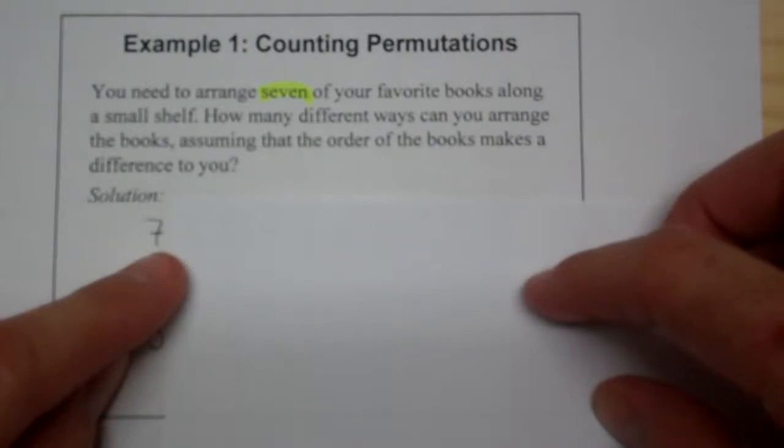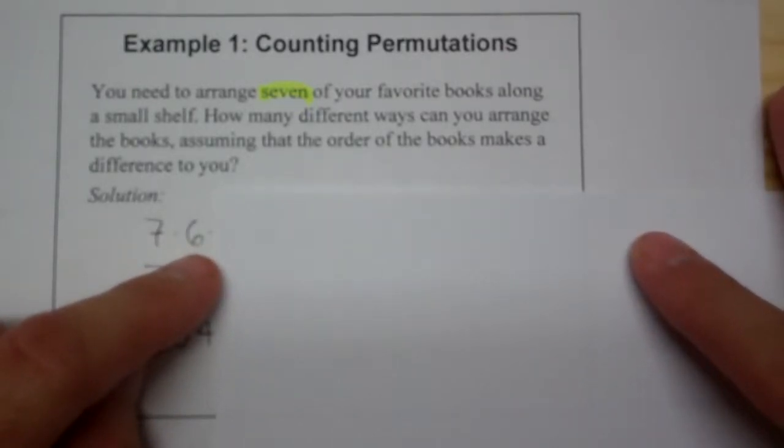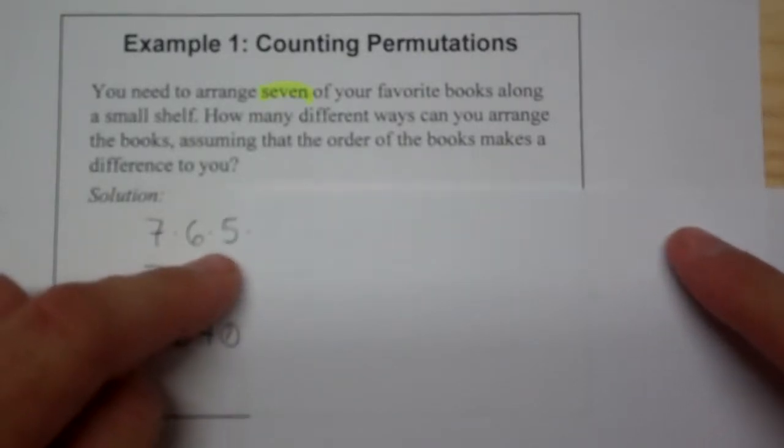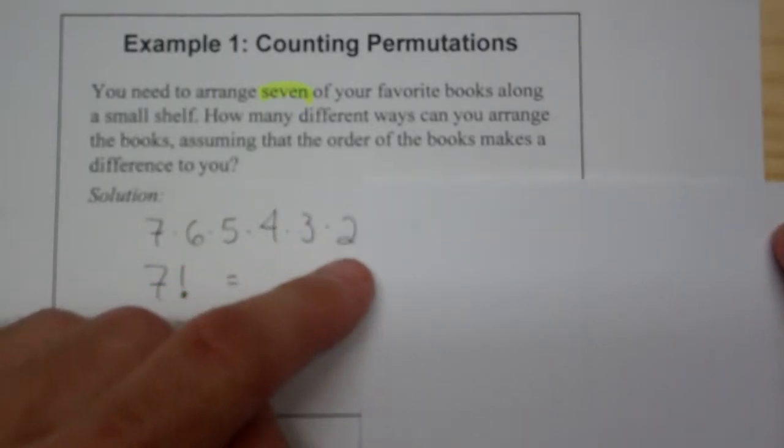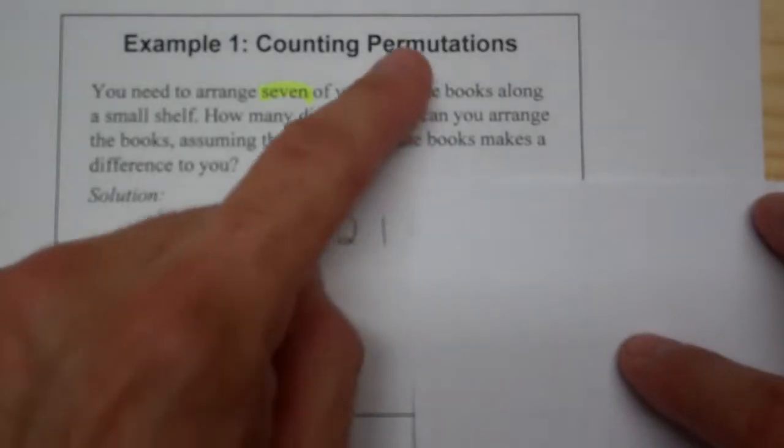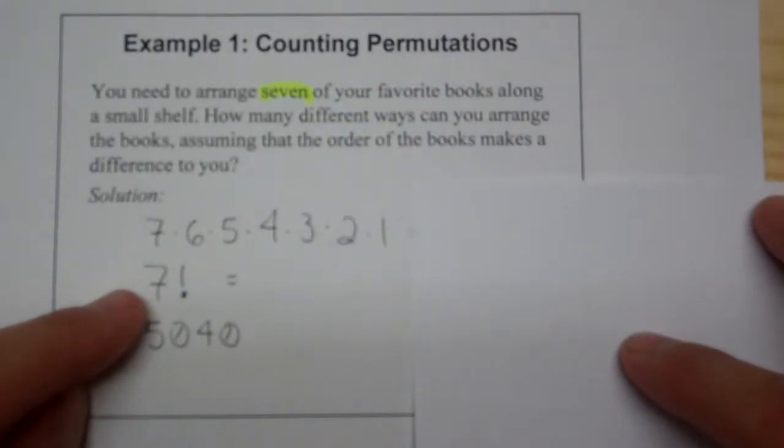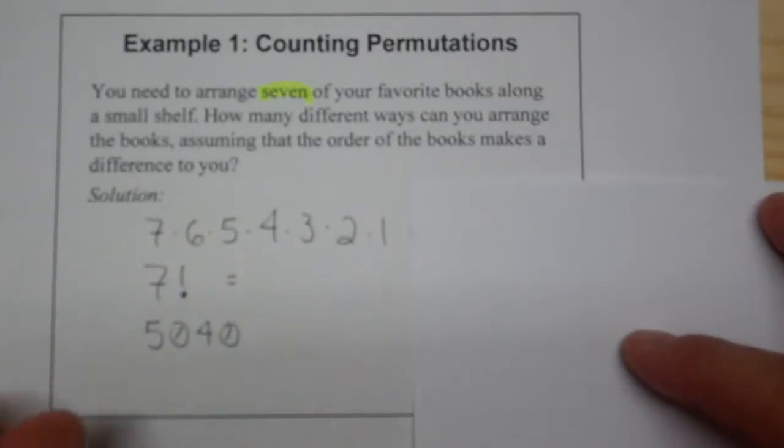Now let's think. If you've already picked a book and now you're going to pick another book out of the stack and put it second, well now you only have six books to pick from for the second spot. And once you've picked that second book then you only have five books for the third spot, four books, then three books, then two books, and then there's only one book left over in the stack that you can pick from.